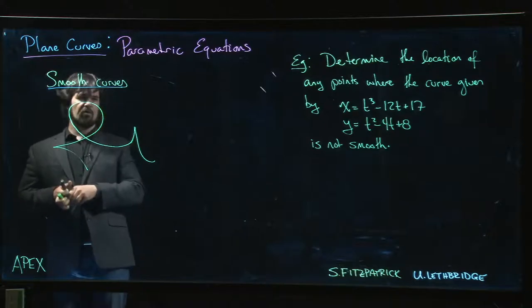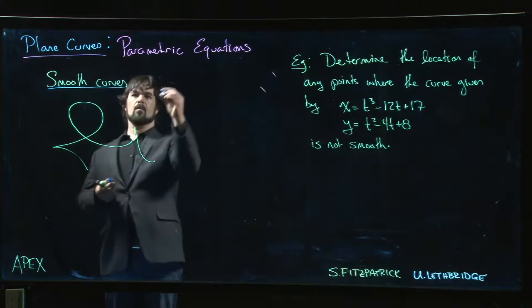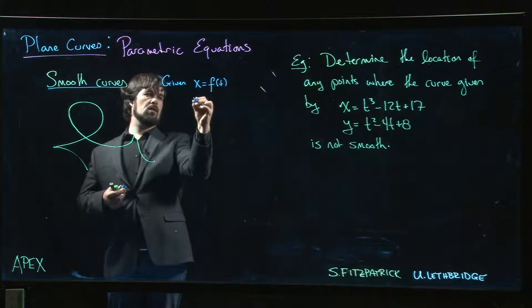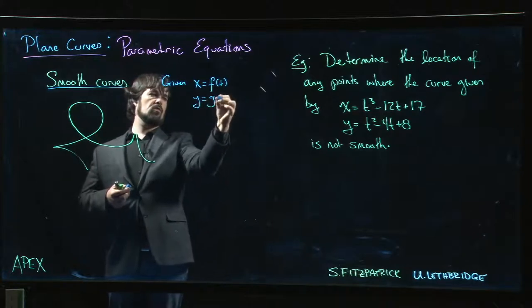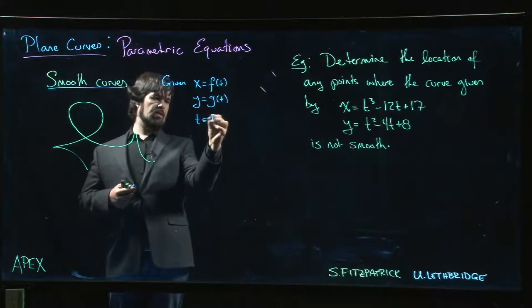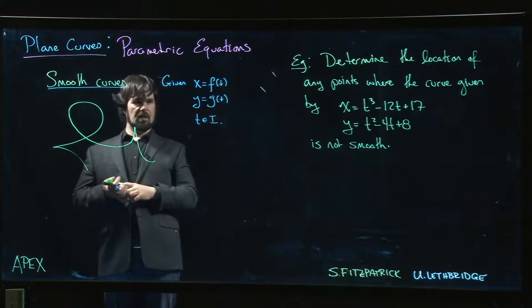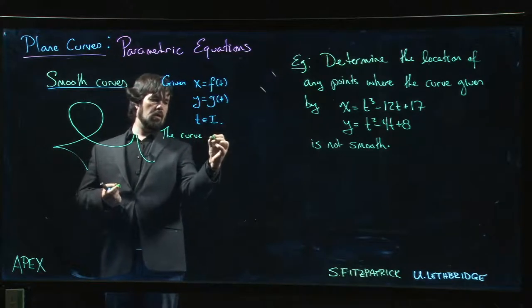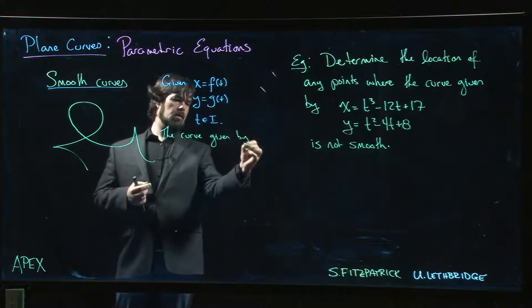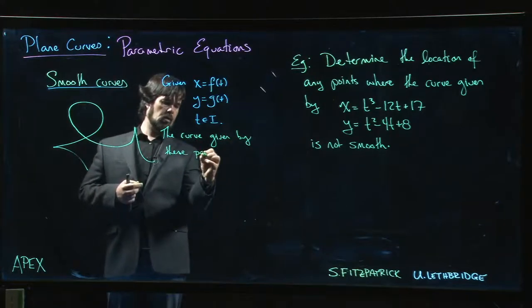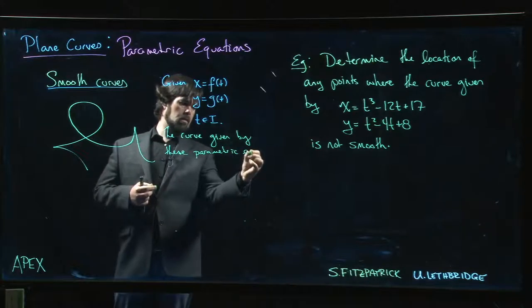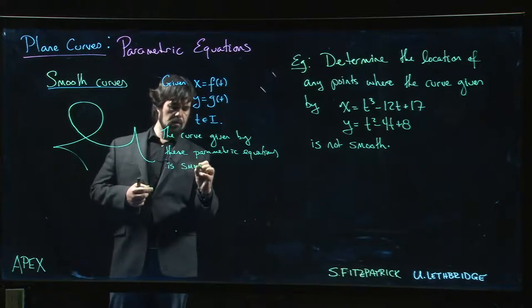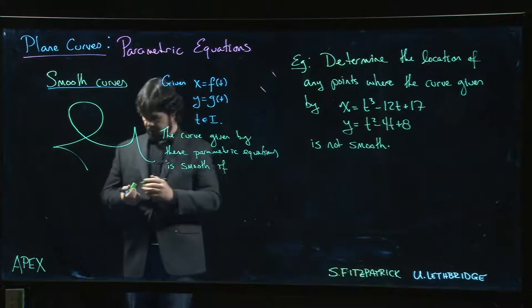So how do we know that we can avoid that? We start with x equals f of t, y equals g of t, t in some interval I.